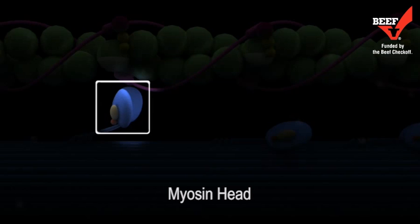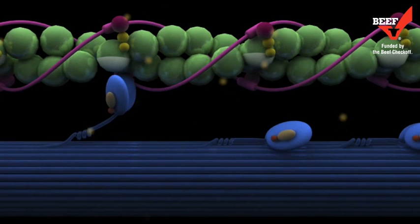Swiveling of the myosin head positions it to be bound to the myosin binding site on actin, forming a cross bridge.